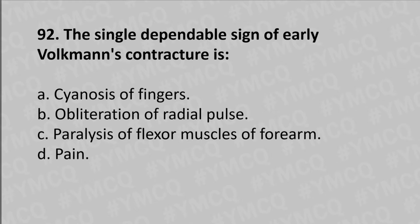Moving to our 92nd question: the single dependable sign of early Volkmann's contracture is option A cyanosis of the fingers, option B obliteration of the radial pulse, option C paralysis of the flexor muscles of the forearm, option D pain. The answer is option D, pain.